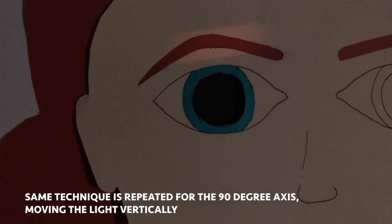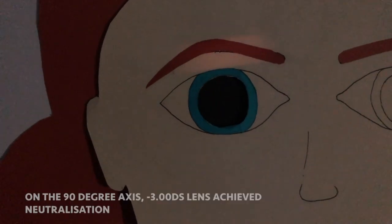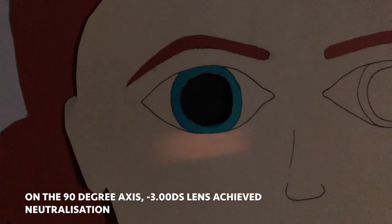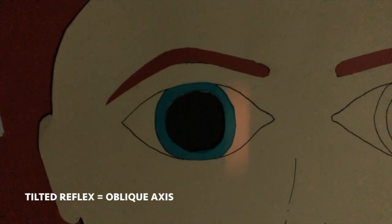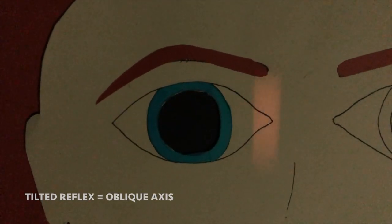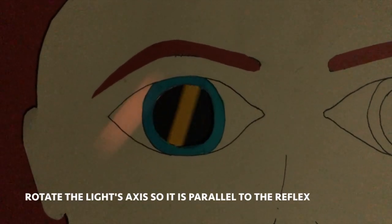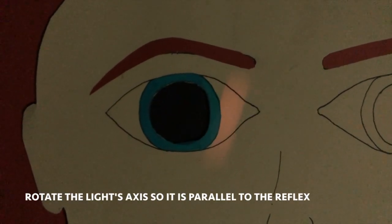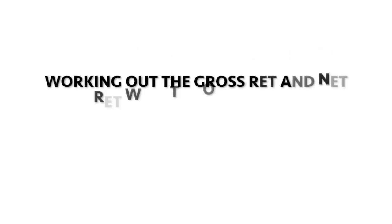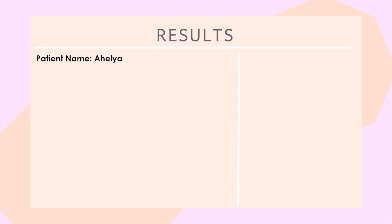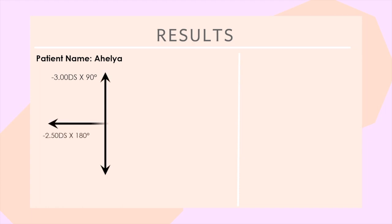This technique is repeated on the 90-degree axis, and the same dioptric lens power is used to achieve neutralisation. If the reflex is tilted, this indicates the axis is oblique, so rotate the retinoscope sleeve to straddle the streak appropriately. For recording, you must write down the gross ret and the net ret — the gross ret being the cross diagram, and the net ret being the overall equation. For patient Ahelia, neutralisation was observed with a minus 3 dioptre lens at the 90-degree axis and a minus 2.5 dioptre lens at the 180-degree axis. This is the gross ret.